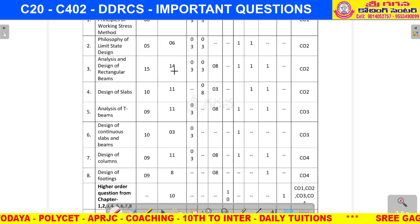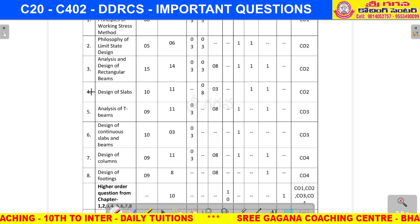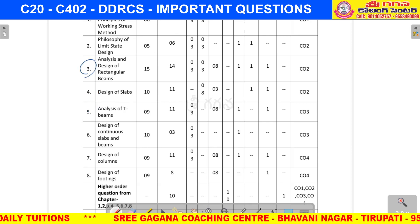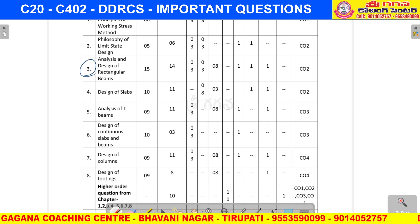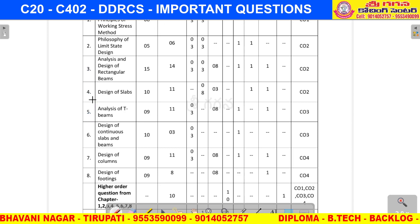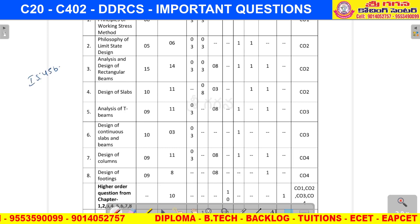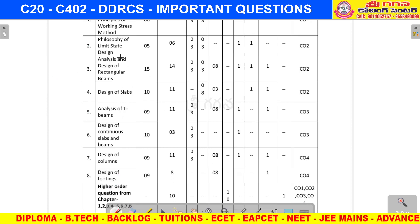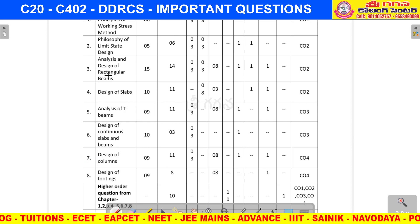The third unit we will prepare is 14 marks — 2 short answer questions and 1 essay question. The fourth and fifth units are 11 marks each — 1 short answer and 1 essay question. The third unit analysis and design of rectangular beam is very, very important.